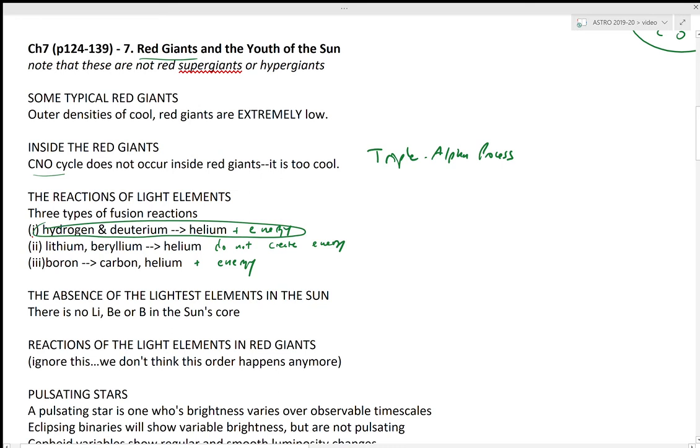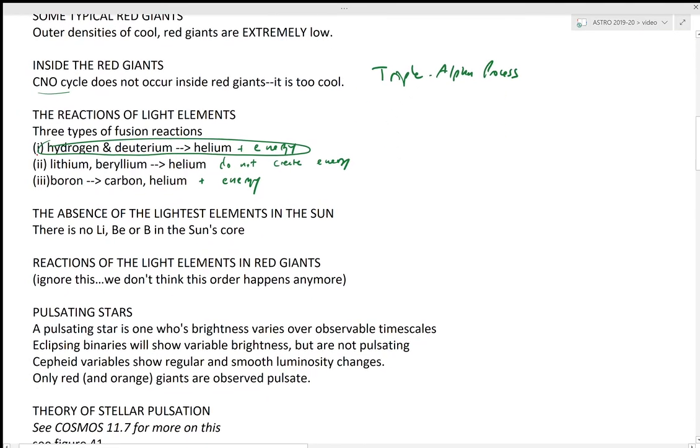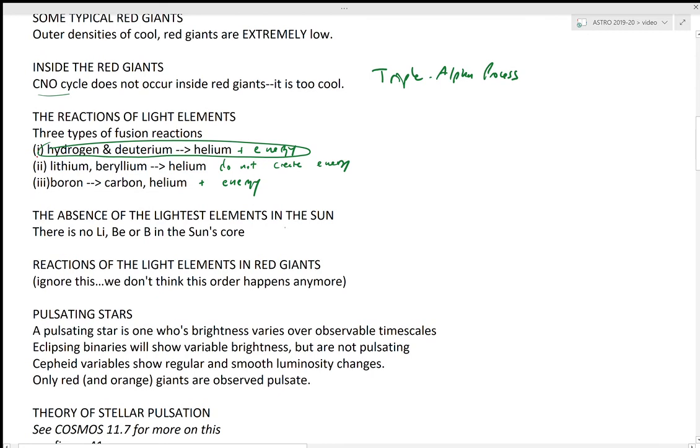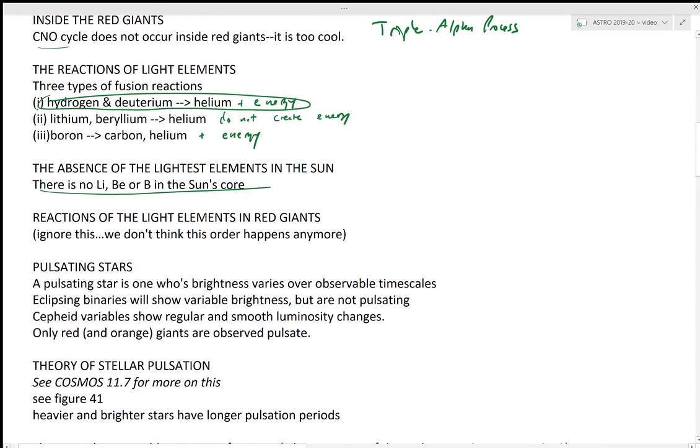So the light elements, we're pretty sure hydrogen and deuterium are what are being fused together in our Sun. The absence of the lightest elements in the Sun - again, this section - there is no lithium, beryllium, or boron in the Sun. Hydrogen is becoming helium, and then helium is building up, and eventually when the helium builds up, the triple-alpha process will take over.